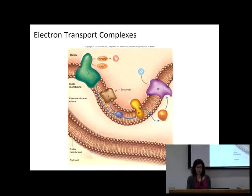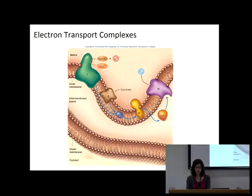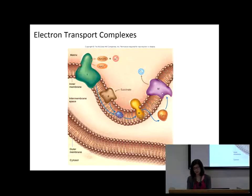Complex 1 and complex 2 supply electrons to coenzyme Q. UQ is another way to write coenzyme Q — coenzyme Q is also known as ubiquinone, so UQ and coenzyme Q are the same thing. Complex 1 and complex 2 give their electrons to coenzyme Q, and it travels through inside the membrane to complex 3. Complex 3 gives the electrons to cytochrome C, which can go into the intermembrane space and travels back to complex 4, which then gives its electrons to oxygen.